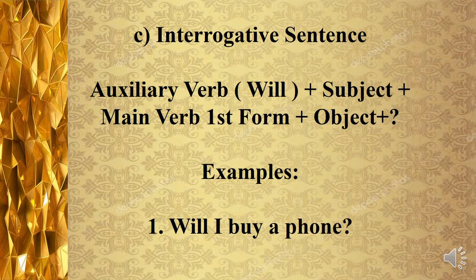Let's discuss the reconstruction of interrogative sentences in future indefinite tense. Jab bhi fail mustakbil mutlik ke interrogative sentences — yani sawal ye jumlai — banaayenge, toh yeh structure follow karte hain: auxiliary verb will comes first, then subject, then verb ki pehli form, then object, and finally a question mark. For example: Will I buy a phone? — yani kya main phone khareedoonga ya khareedoongi?